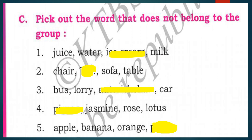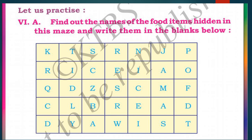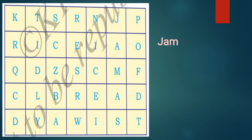Let us practice. Main question six, Section A: find out the names of the food items hidden in this maze and write them in the blanks below. The food items found in the maze are: jam, idli, and bread.